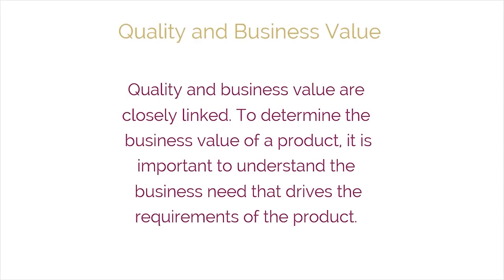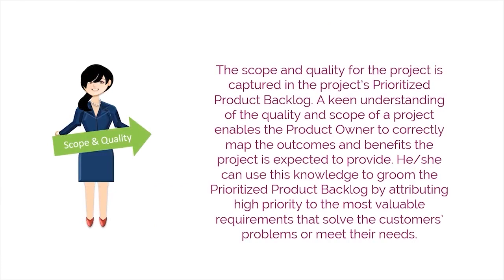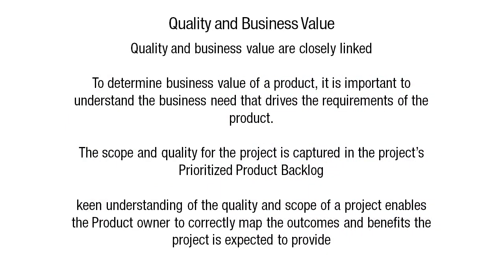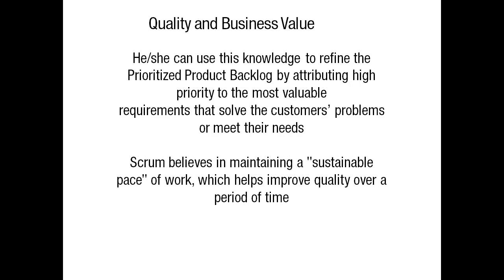Quality and business value are closely linked. To determine the business value of a product, it is important to understand the business needs that drive the requirements of the product. The scope and quality for the project is captured in the project's Prioritized Product Backlog. A keen understanding of the quality and scope of a project enables the product owner to correctly map the outcomes and benefits the project is expected to provide. He or she can use this knowledge to refine the Prioritized Product Backlog by attributing high priority to the most valuable requirements that solve the customer's problems or meet their needs. Scrum believes in maintaining a sustainable pace of work, which helps improve quality over a period of time.